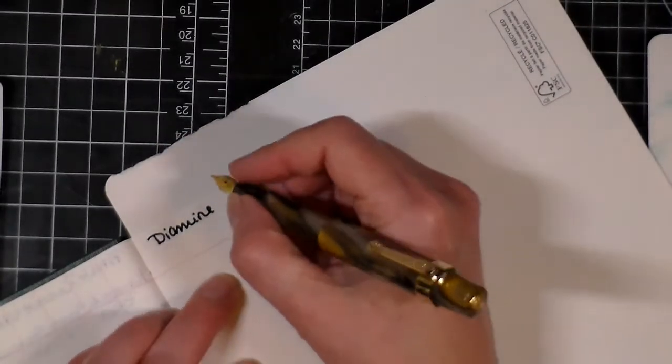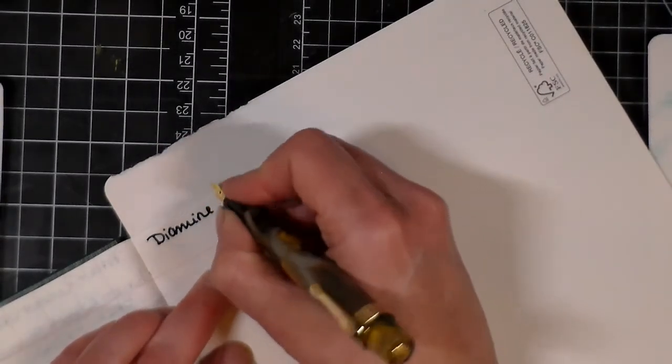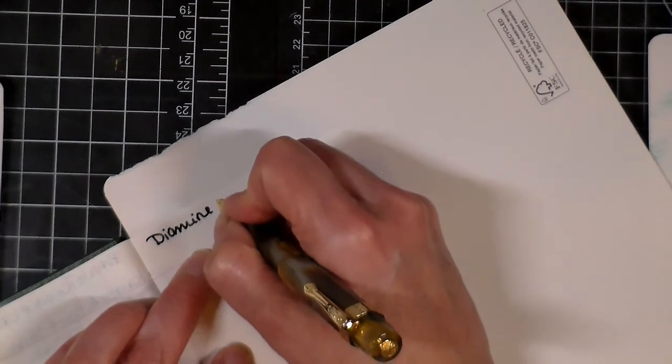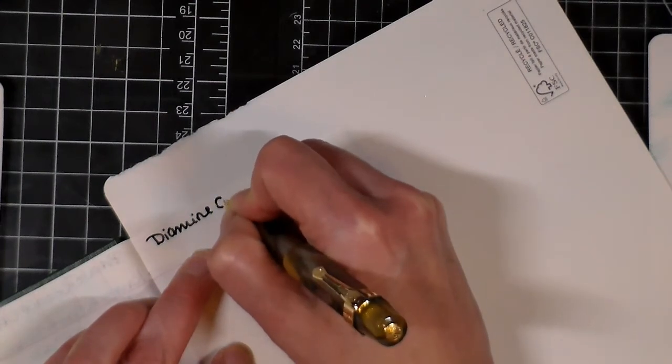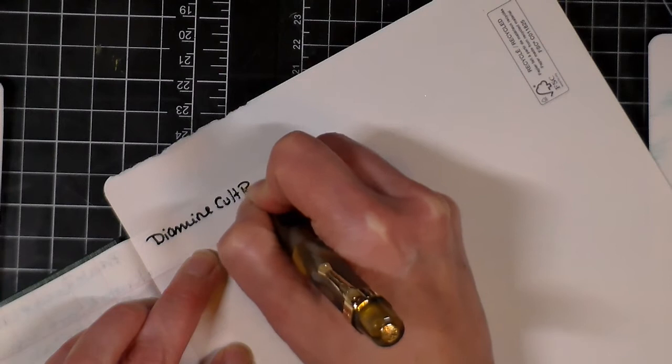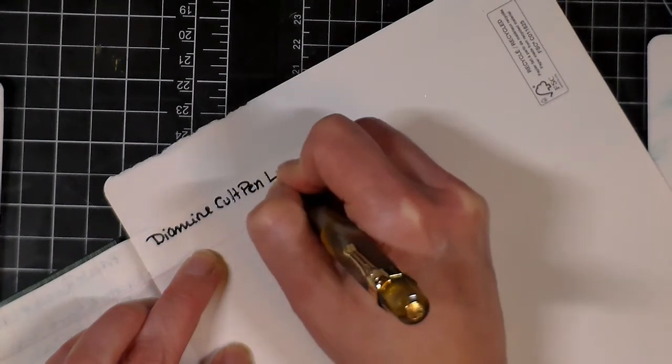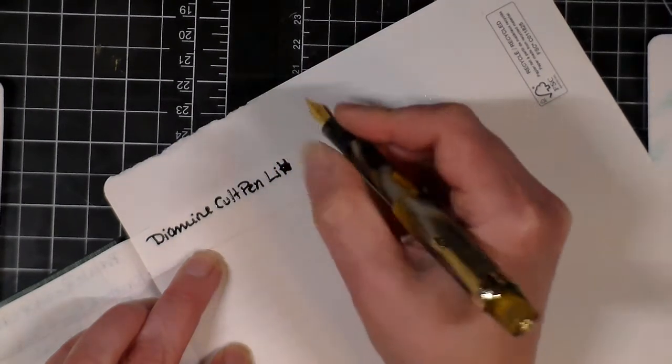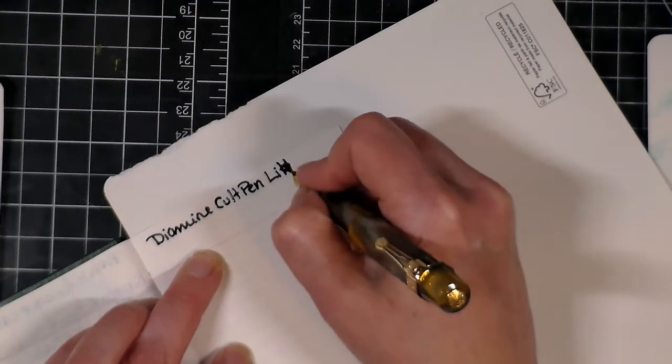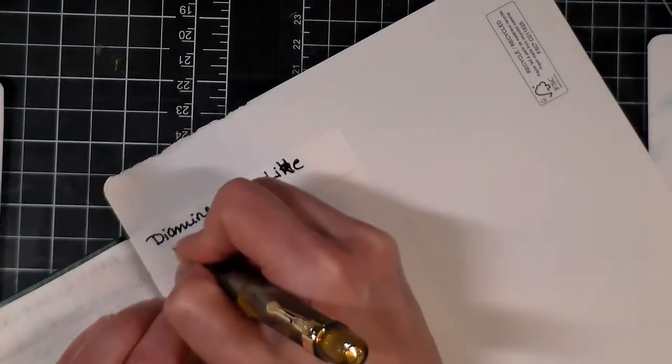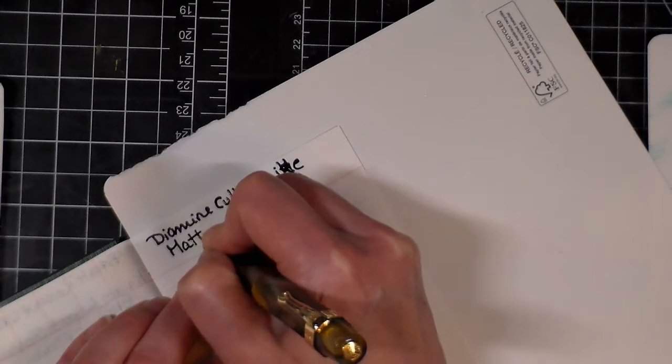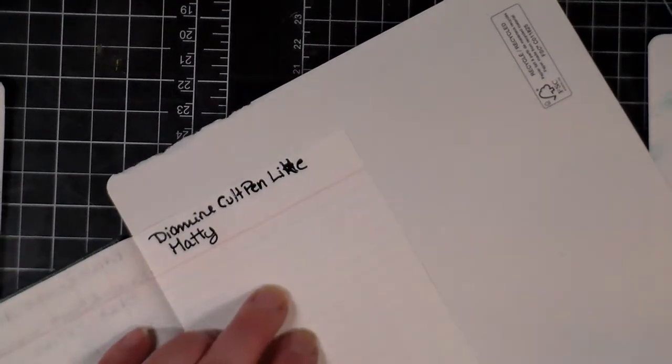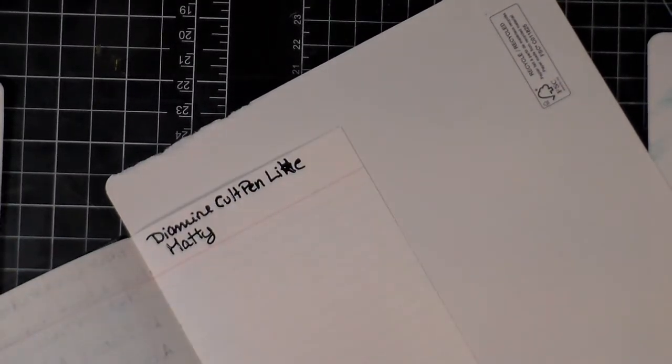This is a really wet pen. Let's protect the next page. So it's Diamine Little Maddy - wow see it's all muddy, it's really juicy to be put in a double broad.